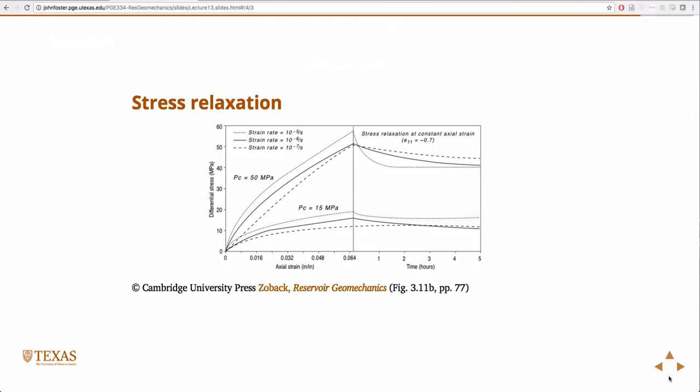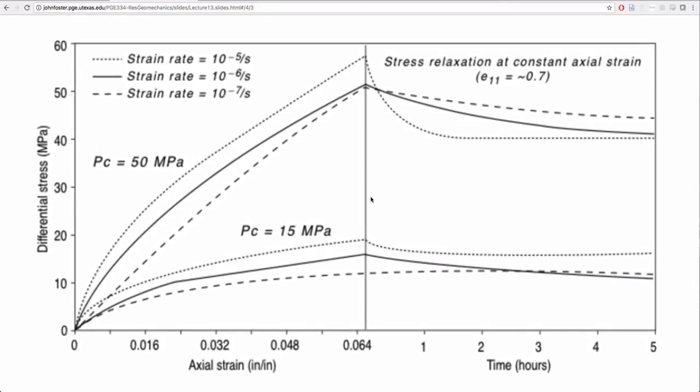So here's some data on stress relaxation. In this case, you have differential stress, so that's like the difference, it's a measure of the shear stress, effectively. It's the difference in the maximum and minimum principal stresses. So it's a measure of shear stress versus axial strain. And in this case, you actually have a family of stress strain curves at different strain rates. So these three are associated with a confining pressure of 15 MPa, and these three are associated with a confining pressure of 50 MPa.